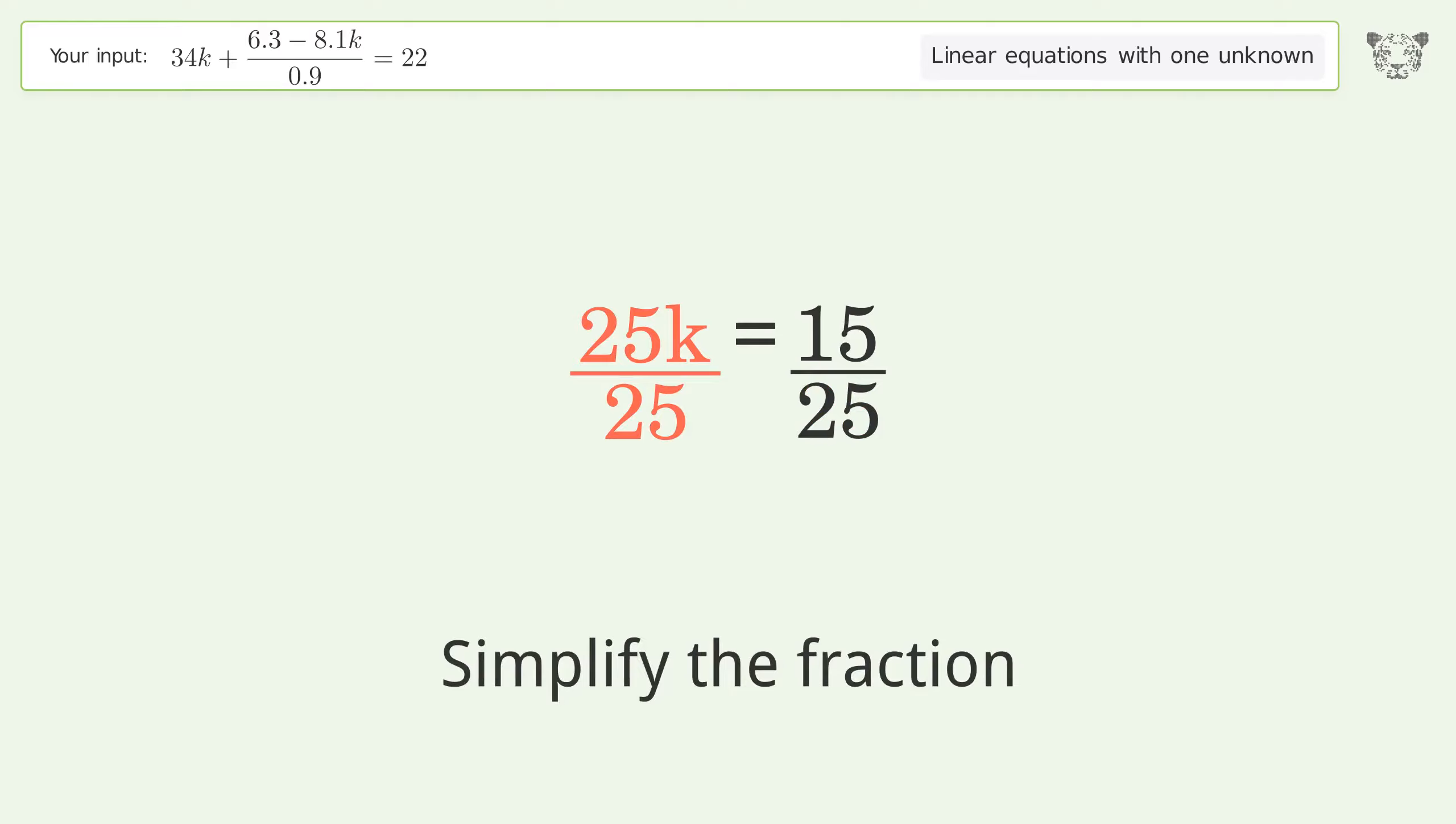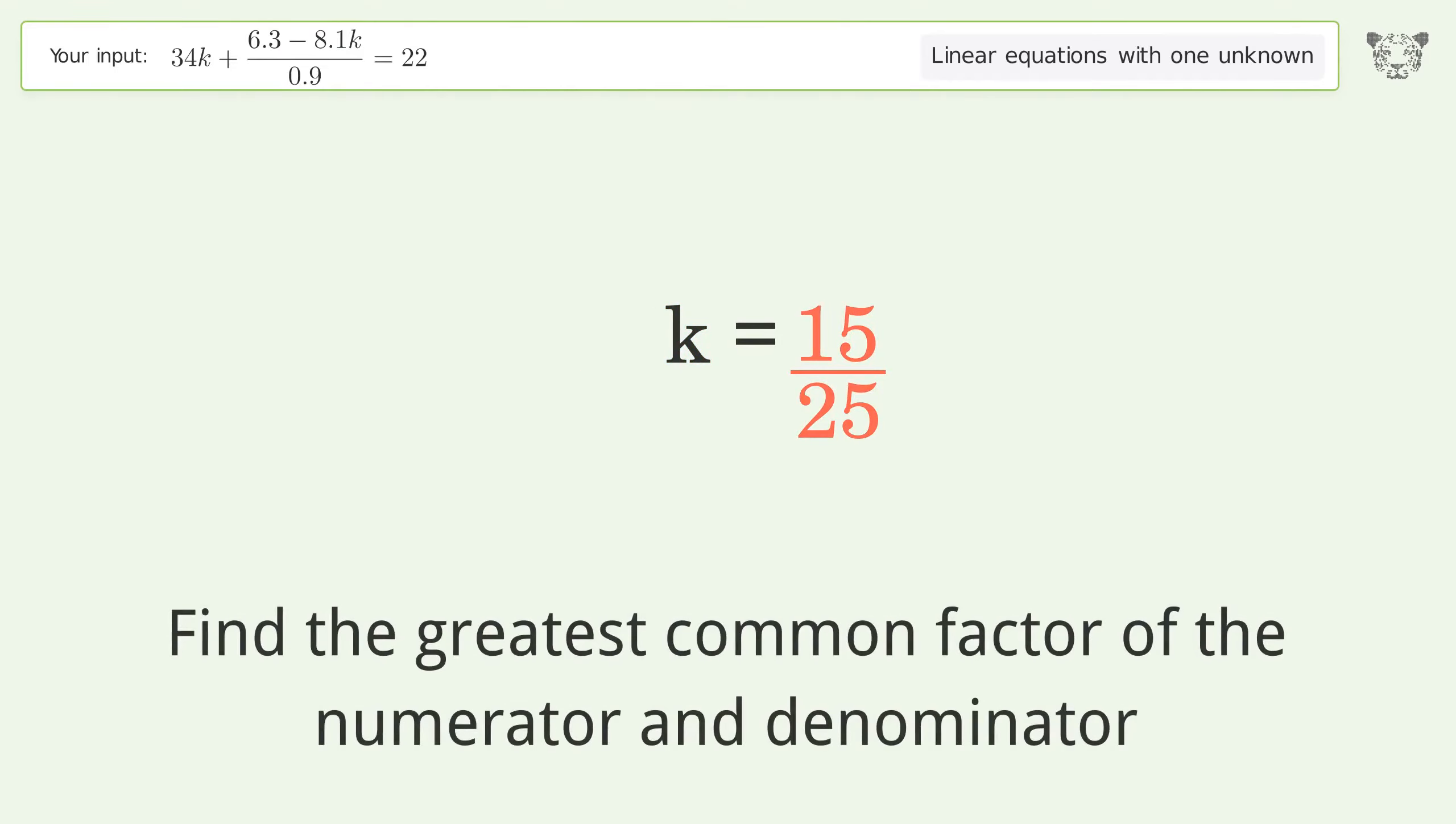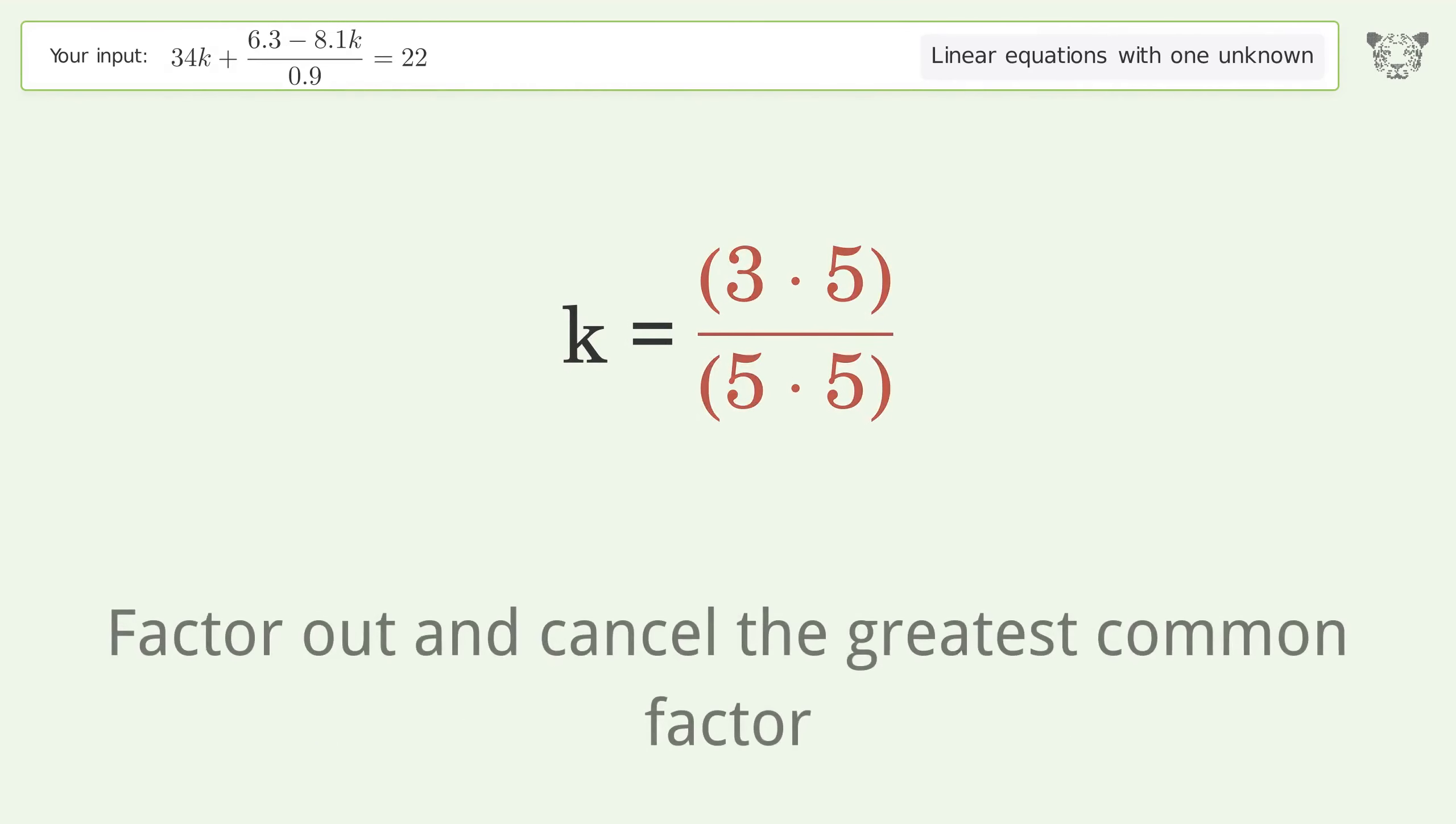Simplify the fraction. Find the greatest common factor of the numerator and denominator. Factor out and cancel the greatest common factor.